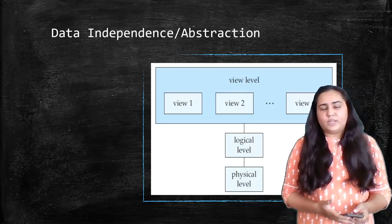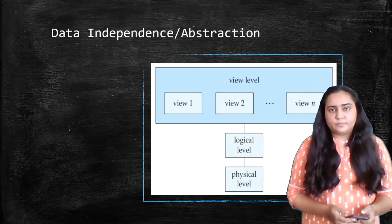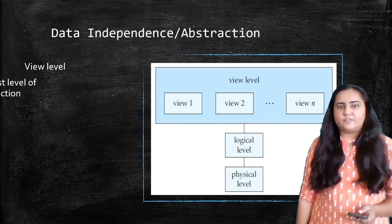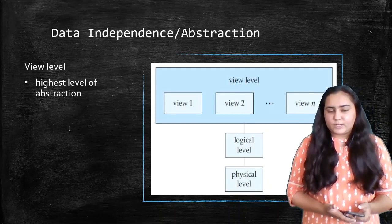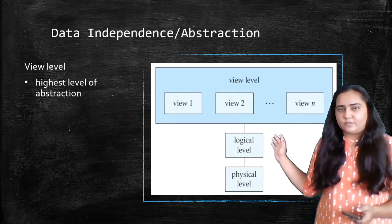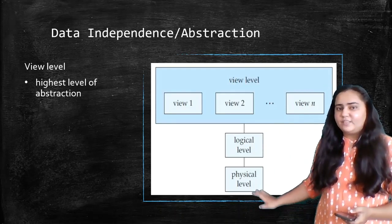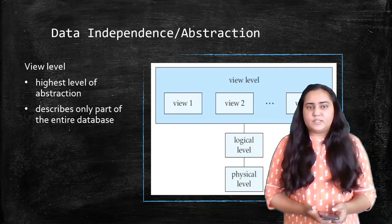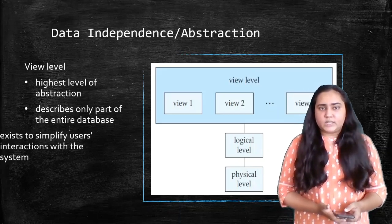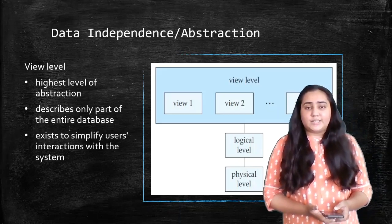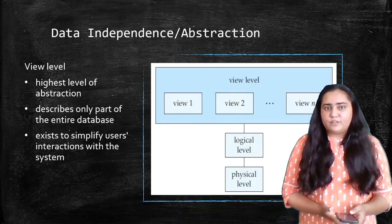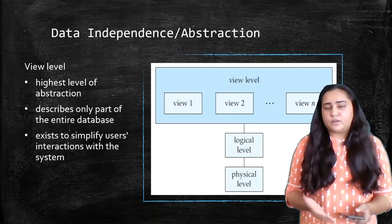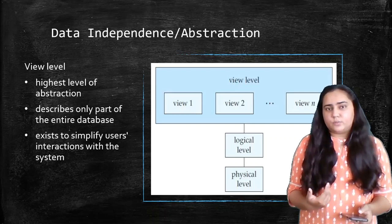The next level is the view level — the topmost level and the highest level of abstraction. If you are at the view level, you don't need to know anything about what happens at the physical level or logical level. It describes only part of the entire database, and it exists mainly to simplify users' interactions with the system.